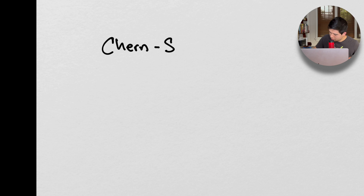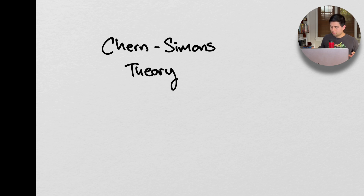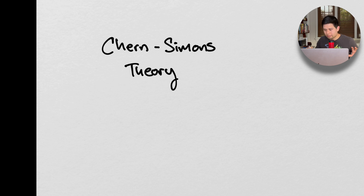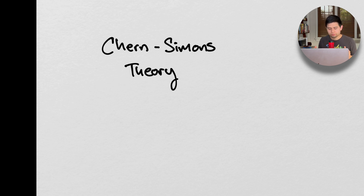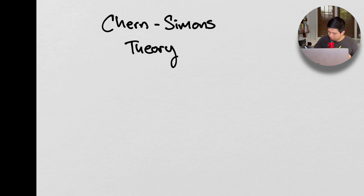What Chern-Simons theory is: it's a theory that develops an action, and this action is fundamentally topological in nature. So we're going to have to cover topology. Topology is a big thing — it's a very interesting thing — and we're going to go over it in quite some detail. We're going to go over algebraic topology, because this is something we have to know if we really want to understand this.